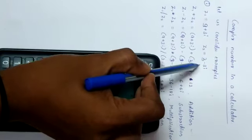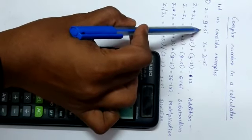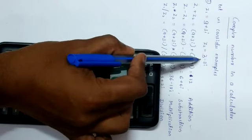Let us consider two complex numbers: Z1 equals 9 plus 3i, and Z2 equals 3 minus 3i.